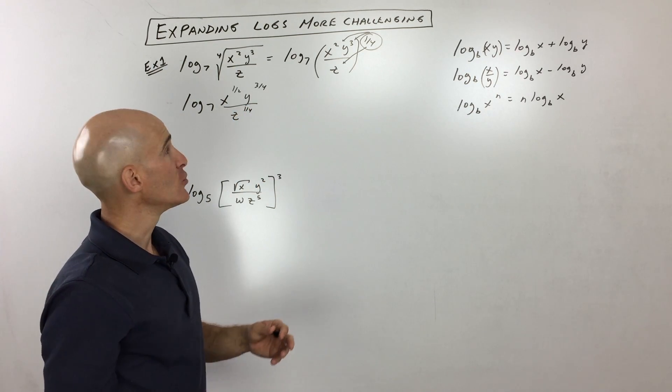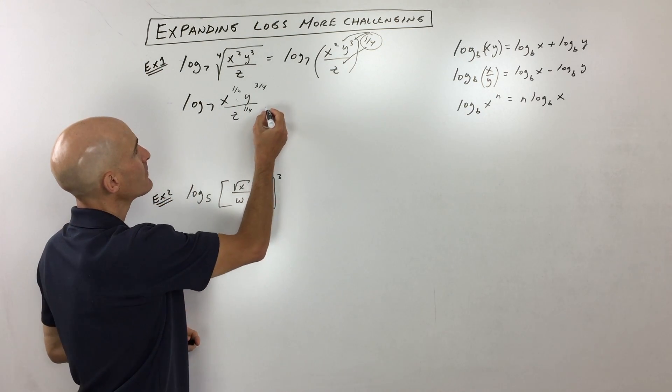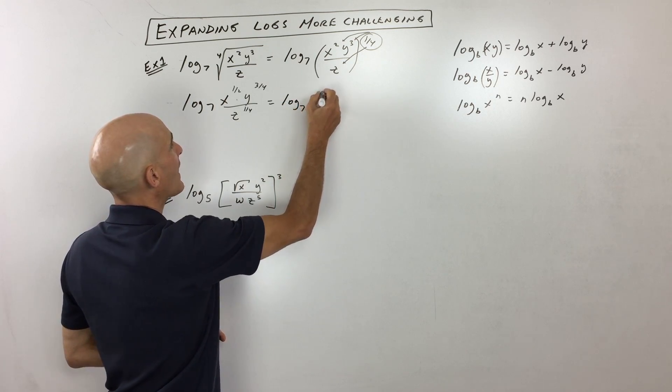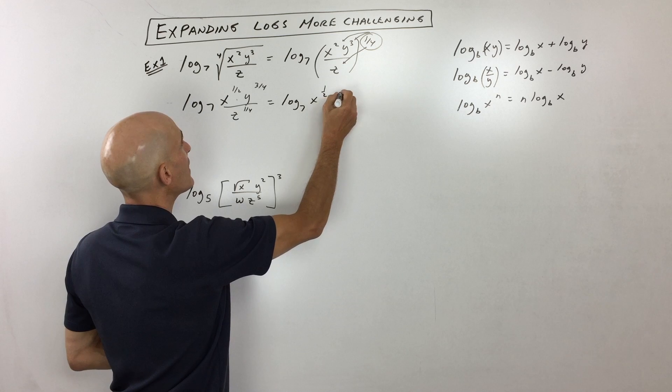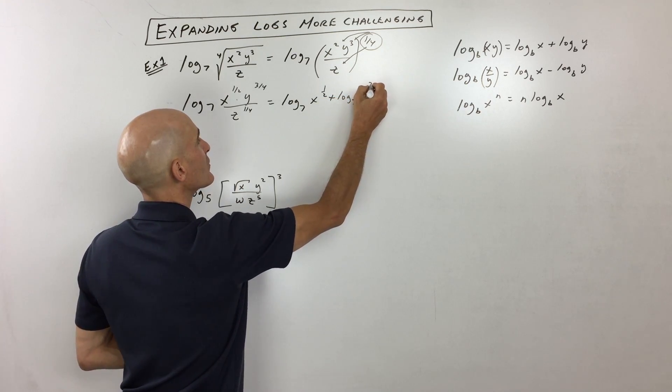Now what we're going to do is, you can see these two quantities in the numerator, see how they're multiplied together? So we can write this as a sum. We could say log base seven of x to the one-half plus log base seven y to the three-fourths.